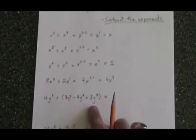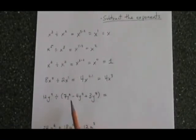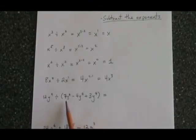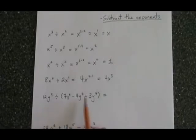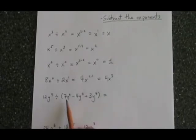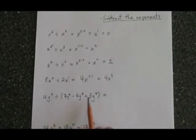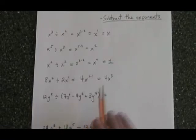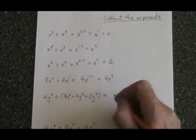In this example, we have a bracket, and BEDMAS says we have to simplify a bracket before we can do a division. It turns out that all of the terms inside the bracket are similar. We have 7y to the 7 minus 4y to the 7 plus 3y to the 7. 7 minus 4 is 3 plus another 3 is equal to 6y to the 7.